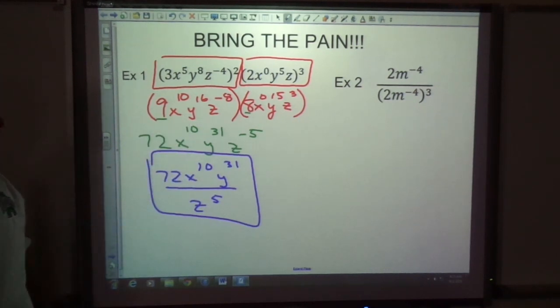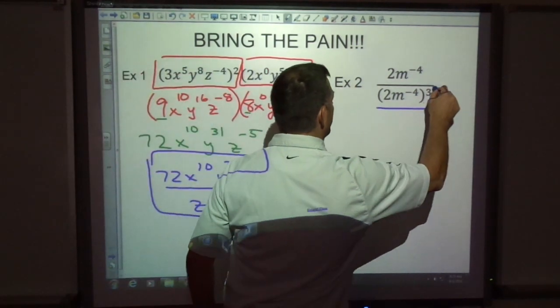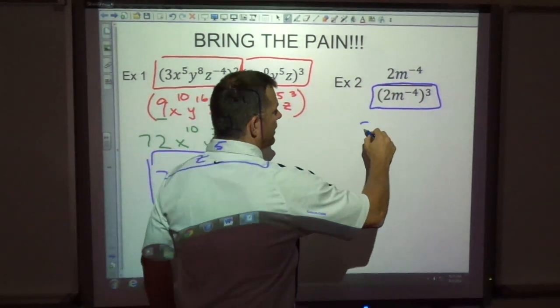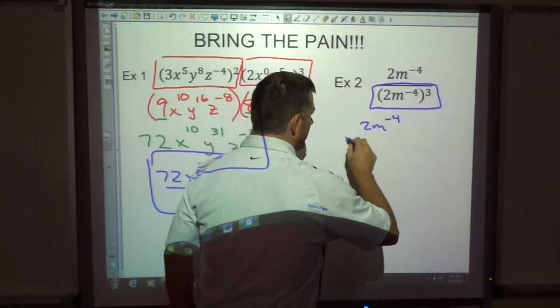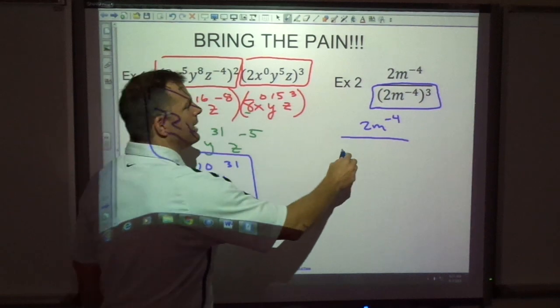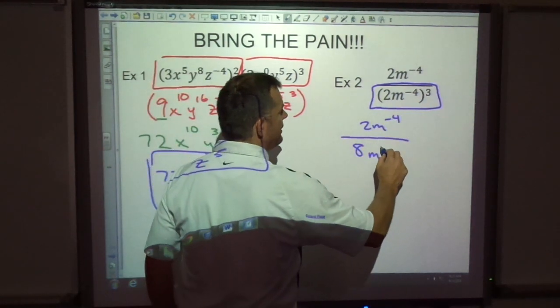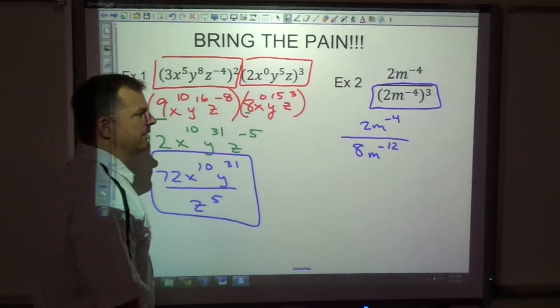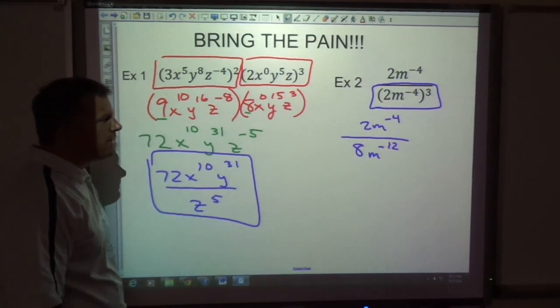Okay, the next one. We have power to power, that's what I'm looking for first. Here's my power to power. So I'm going to keep the top the exact same in the bottom. 2 to the third is 8, m to the negative 12.